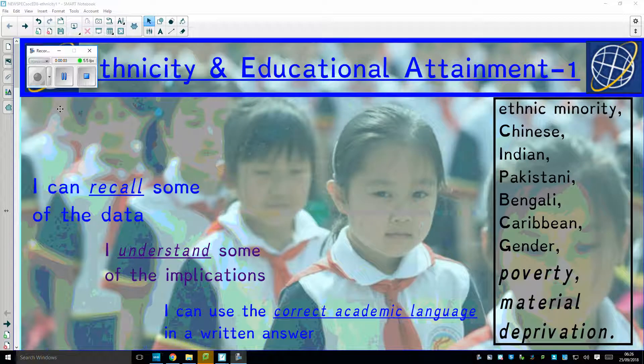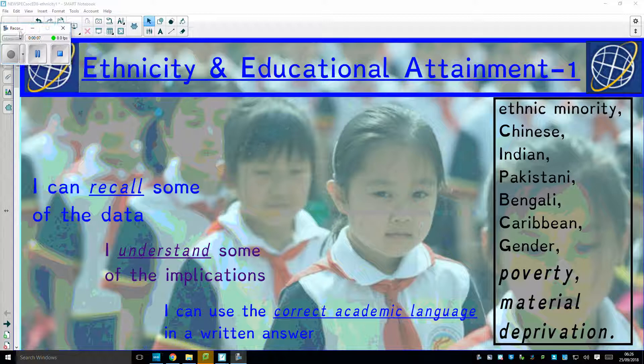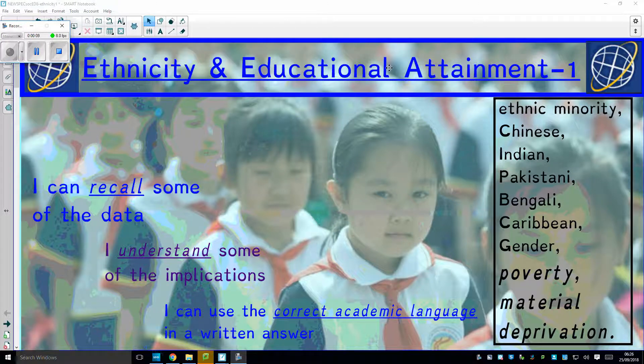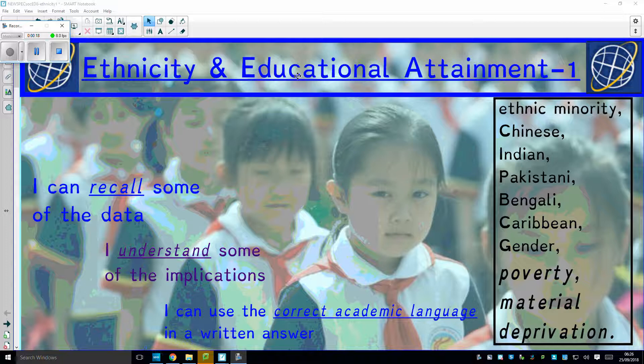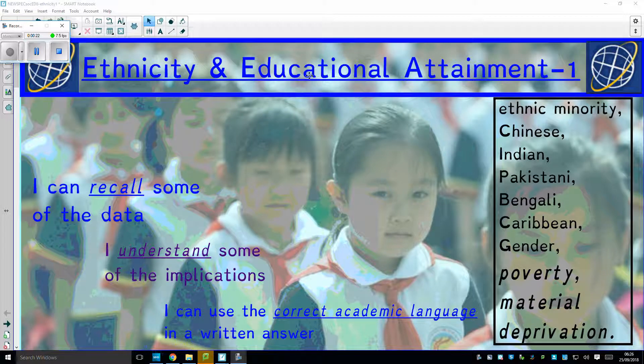This is a lesson for the sociology of education. We're looking at ethnicity and educational attainment part one, the factors that connect these two things. These things are correlated. Ethnicity and educational attainment are correlated, not necessarily directly causational.